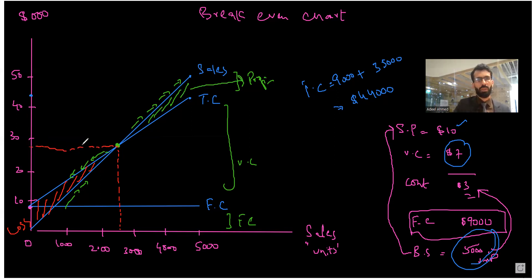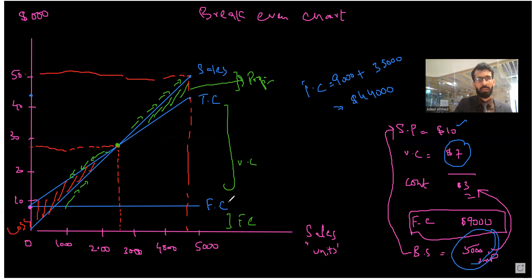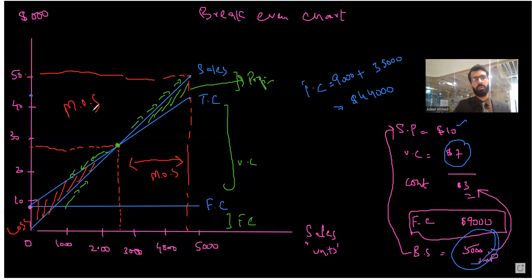The margin of safety is the difference between budgeted sales of 5,000 units and break-even sales of 3,000 units. This area on the diagram can be declared as the margin of safety, both in terms of units and in terms of sales revenue. This is the complete break-even chart for a single product.